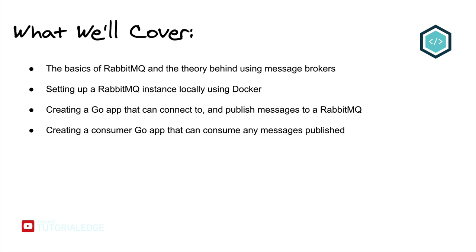Let's take a look at what we're going to be covering in this tutorial. We're going to start off by covering the basics of RabbitMQ and the theory of why you should use message brokers in your distributed applications. We'll then look at how to set up a simple RabbitMQ instance locally using Docker, create a Go app that publishes messages to it, and finally consume those messages using another Go application.